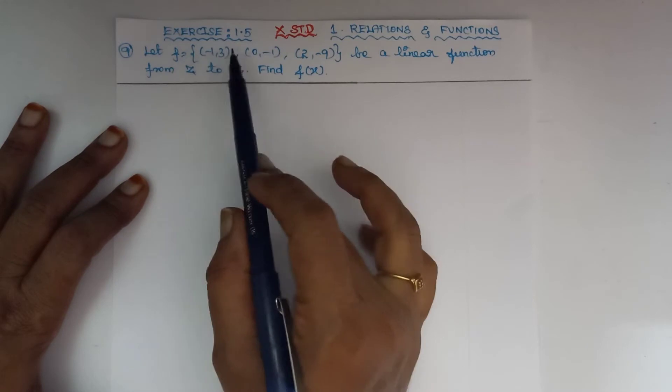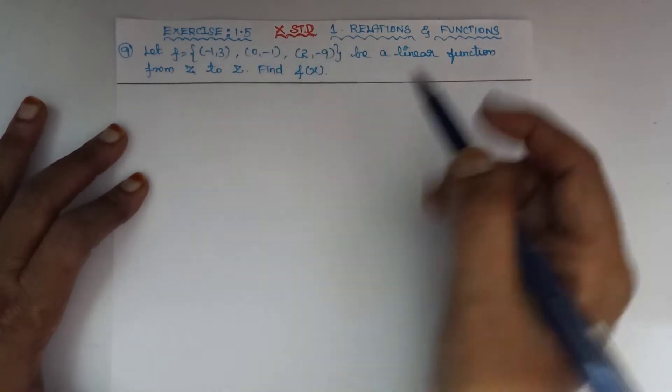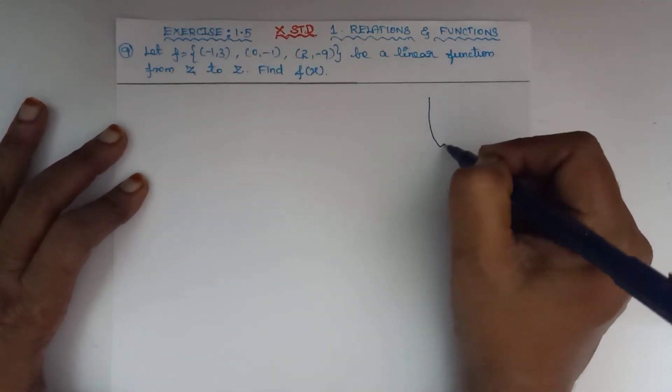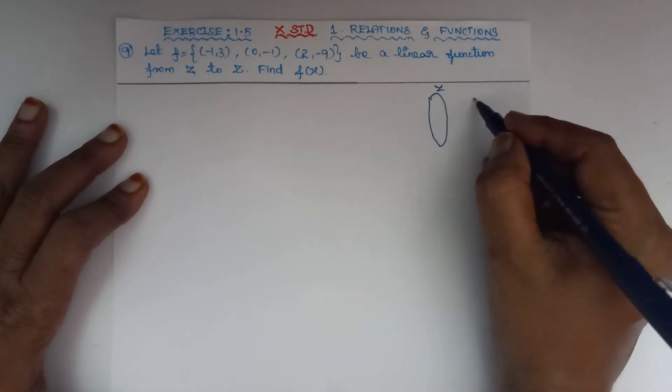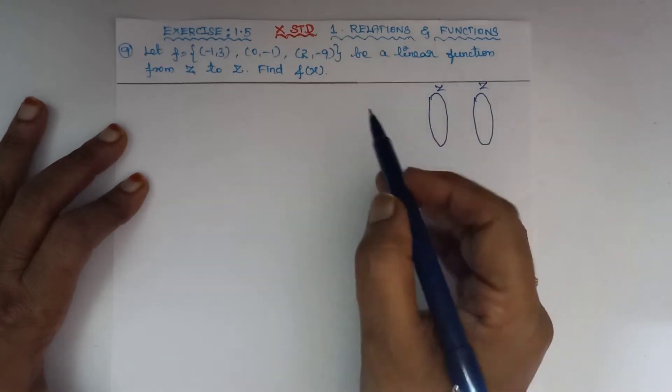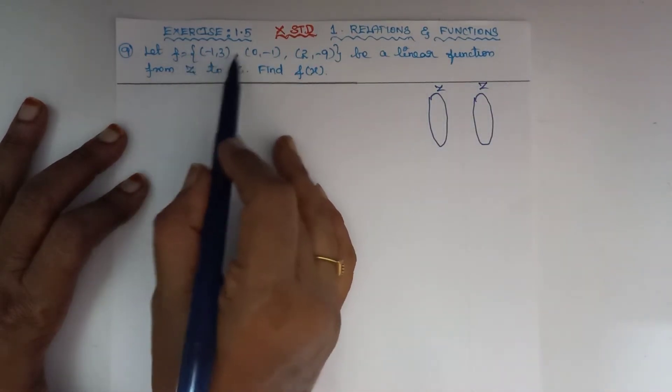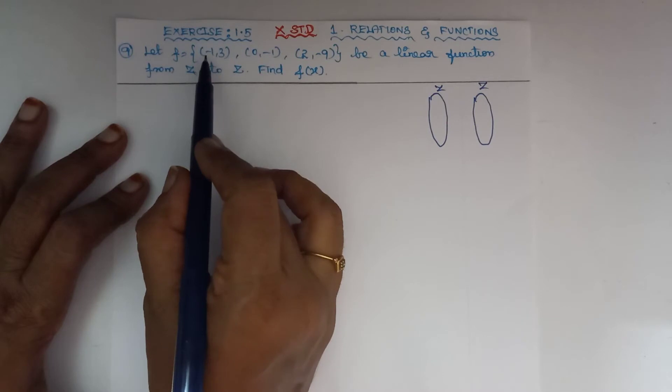The function is represented in ordered pairs. Z to Z means the domain contains elements that are integers, and the codomain also contains elements that are integers. The function is given in ordered pairs.